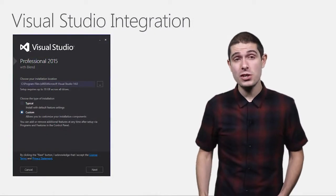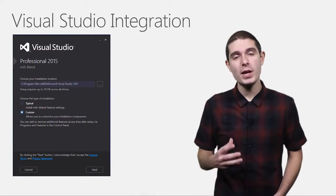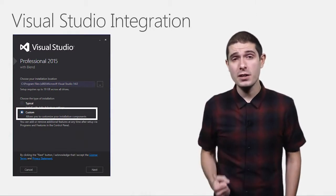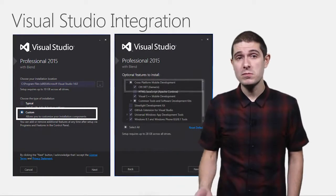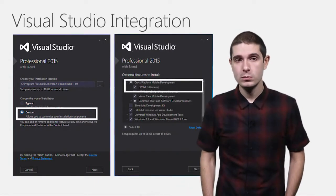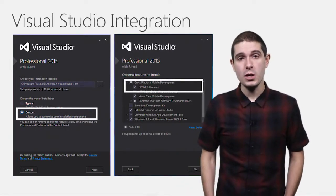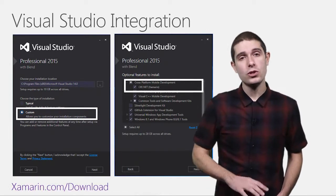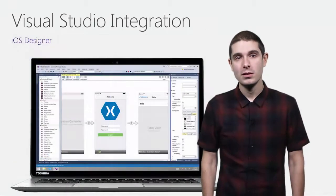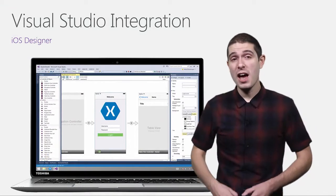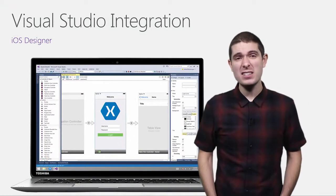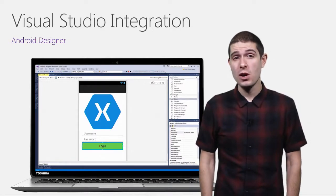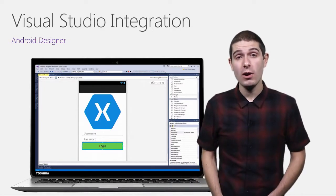It's never been easier to get started with Xamarin. When you install Visual Studio 2015, simply select Custom, and then on the next screen, select Xamarin — you're good to go. If you've already installed Visual Studio, simply go to xamarin.com/download for our full universal installer. You'll then have access to our great iOS and Android designers built right into Visual Studio to design and deploy your applications.